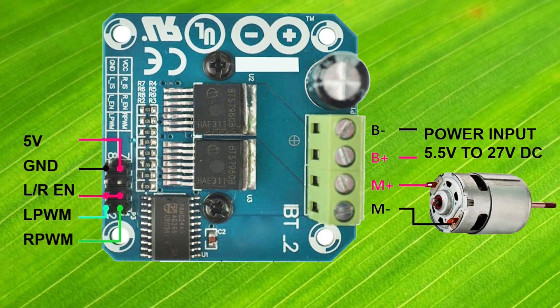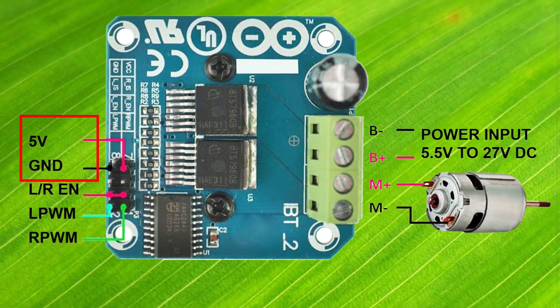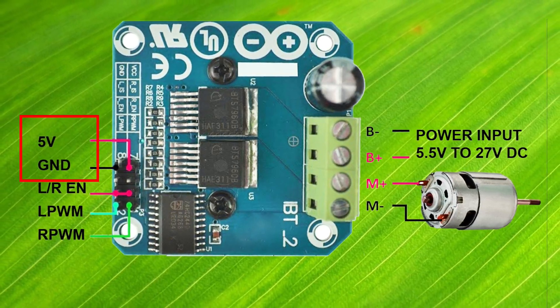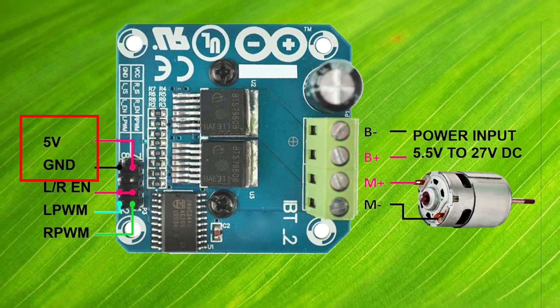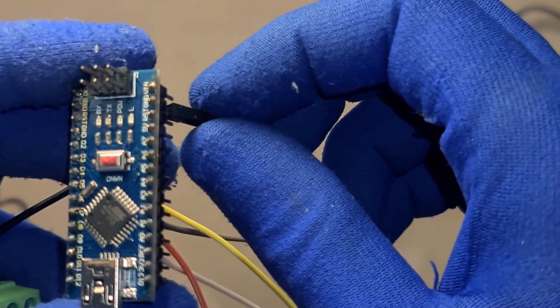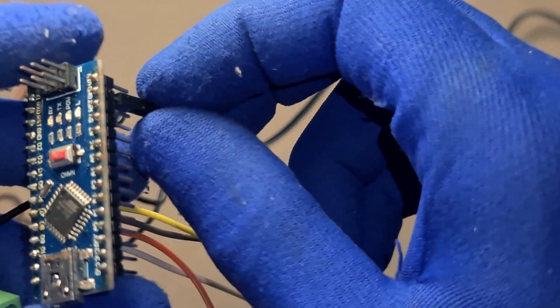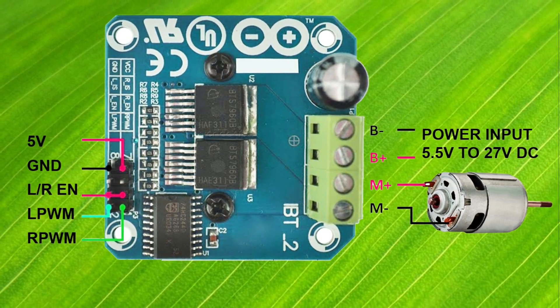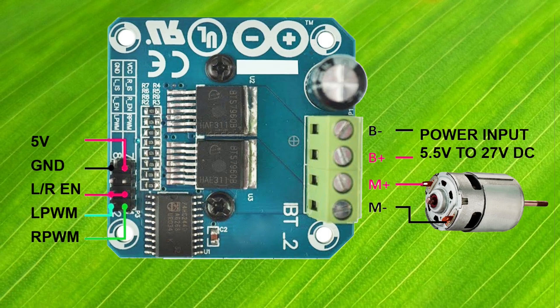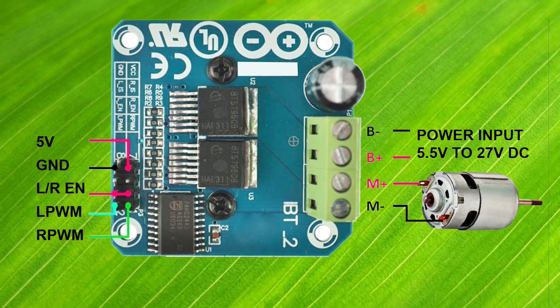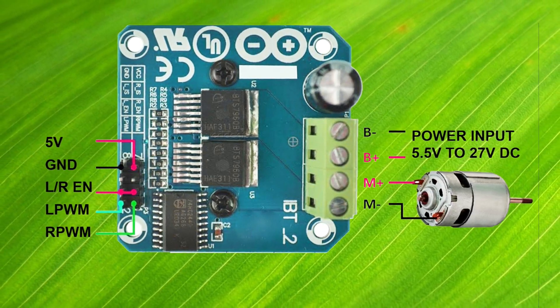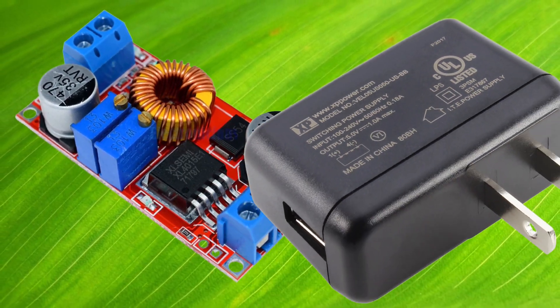The BTS 7960 43A motor driver requires a separate 5 volt logic supply to operate. It does not include an internal 5 volt regulator. So we need to provide this 5 volt externally. If you're using an Arduino Nano, simply connect the Nano's 5 volt pin to the driver's VCC. And also connect the GND of the Nano to the GND of the motor driver. If you're not using an Arduino and want to control the motor manually, you'll still need to supply a stable 5 volt to the VCC pin from another source, like a buck converter or USB 5 volt supply.